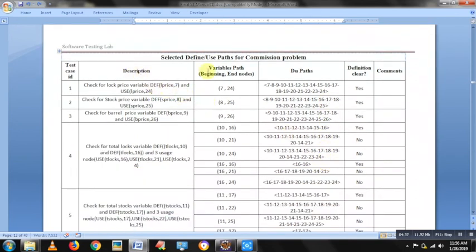So, the variables, I am trying to check it for log price. It is defined at 7, used at 24. I will list all the nodes from 7 till 24. So, after 7, I can reach 8, 9, 10, 11, 12, 13, 14, 15, 16, 17, 18, 19, 20, 21, 22, 23, 24. So, and also, I can specify whether this DO path is definition clear or not. If the variable that is log is not defined along the path anywhere, it is definition clear.